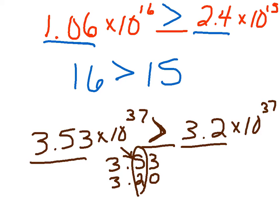So 3.53 times 10 to the 37th is greater than 3.2 times 10 to the 37th because 3 and 53 hundredths is greater than 3 and 2 tenths.